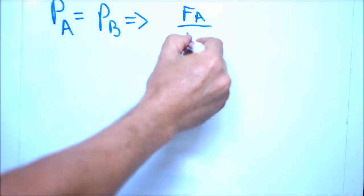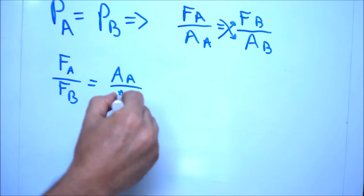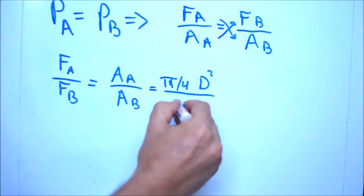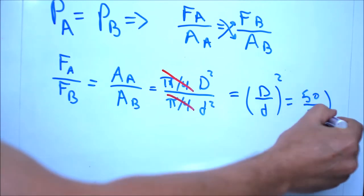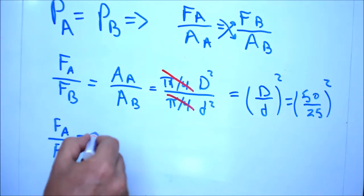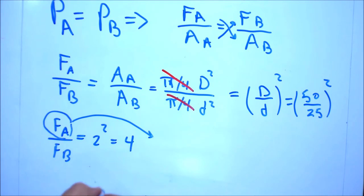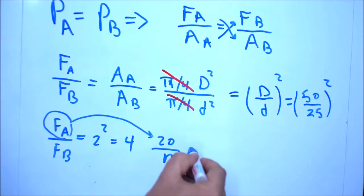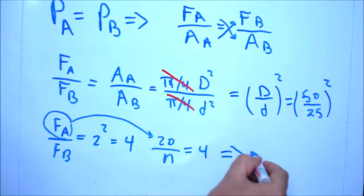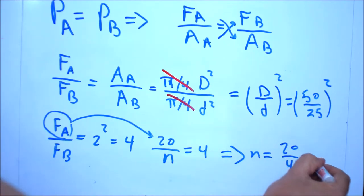Pressure is force divided by area. Rearranging, the area can be written as pi D squared divided by 4. We cancel pi over 4 and get the ratio of diameters squared, so the ratio of forces equals 4. Force can be represented as the strength of one bolt times number of bolts. Since the relation is linear, we cancel constants and get the bolt number ratio. We have 20 bolts in flange A and unknown N in flange B: N equals 20 divided by 4, which gives 5 bolts.